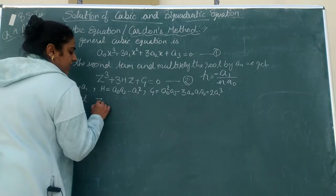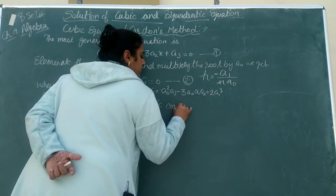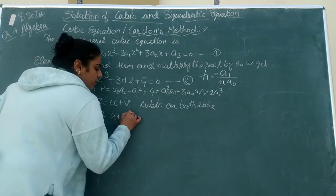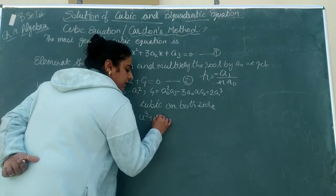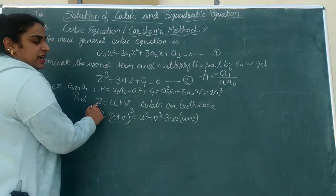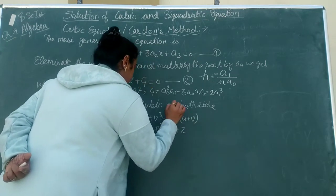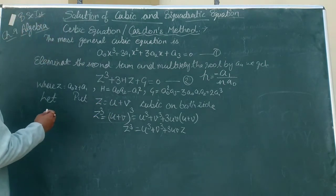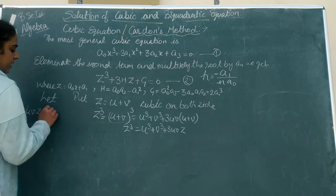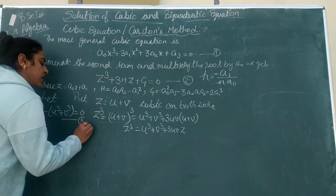Let us suppose Z = U + V. Cubing both sides: Z³ = (U + V)³ = U³ + V³ + 3UV(U + V). Since U + V = Z, we substitute to get: Z³ − 3UV·Z − (U³ + V³) = 0. This is Equation 3.